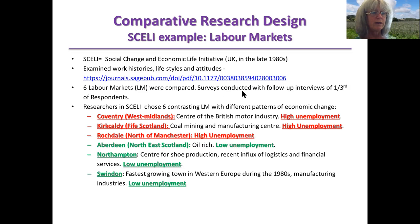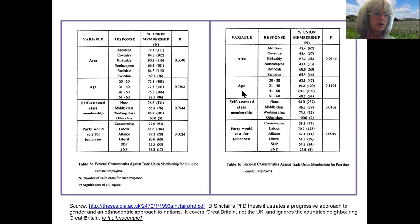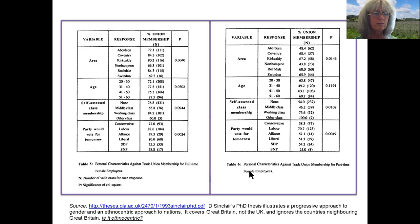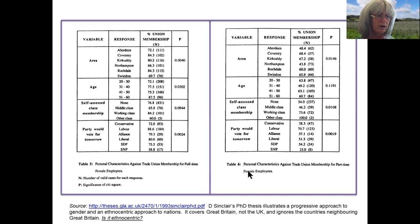Here's the PhD thesis that came out of the study. A big comparative study is done by a team — it's not done in your master's dissertation. This PhD thesis compared those six areas: Aberdeen, Coventry, Kirkcaldy, Northampton, Rochdale, and Swindon. Chi-squared tests can be used to make comparisons of how variables are associated in these different areas and across them. So you have the idea of within and across — or between — the areas. But what you don't see here is any other countries.